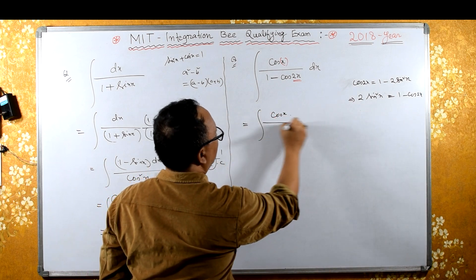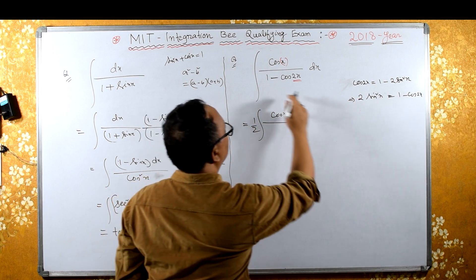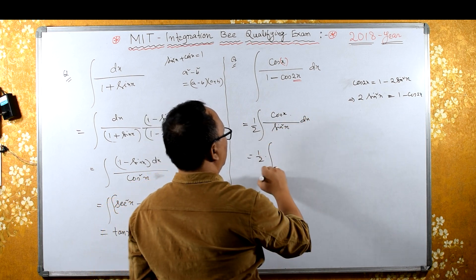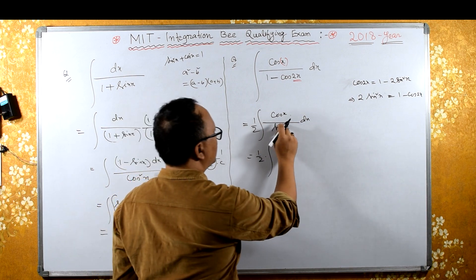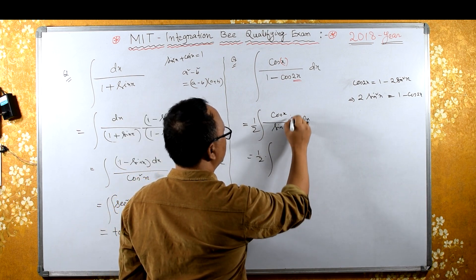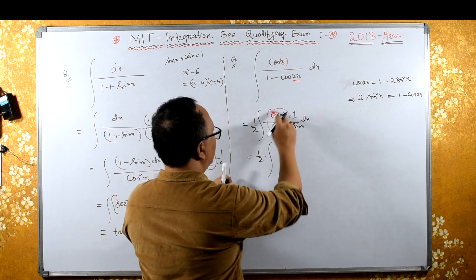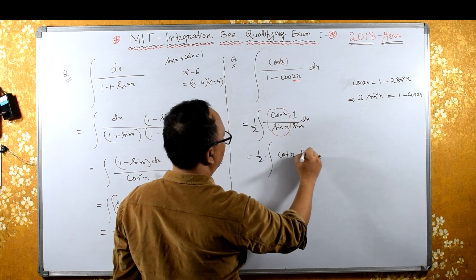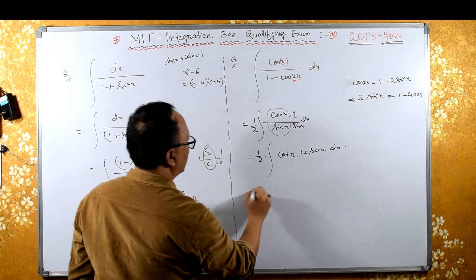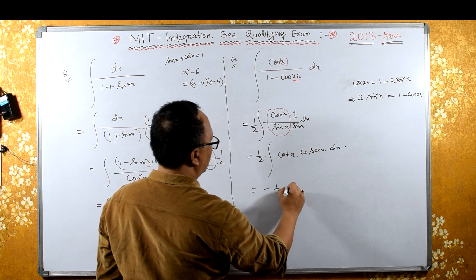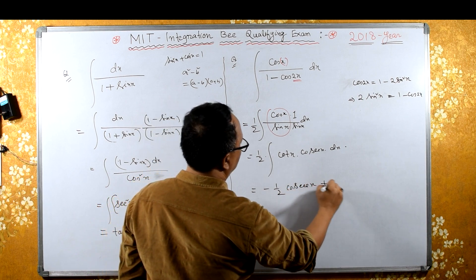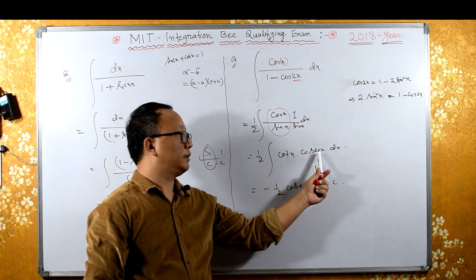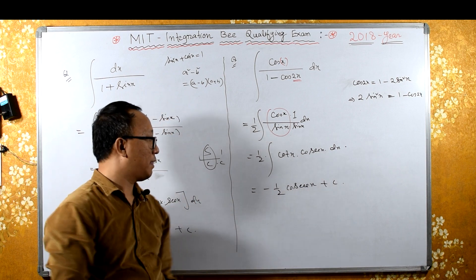Using the formula, we can take 1/2 outside the integral. We have cosx over sin²x, and separating sinx·sinx we can write the terms as cosine expressions. The solution proceeds from this substitution to reach the final answer.